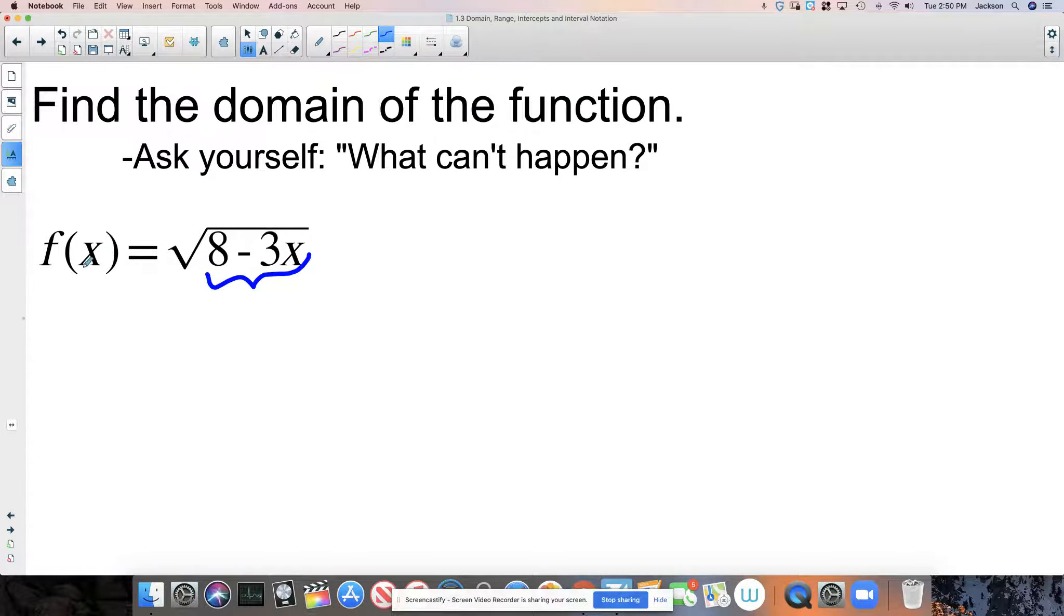The result of this—whatever I plug in here is going to get plugged in here. If I plug, let's just say 10, f of 10. If I put 10 into this function, it's going to say 8 minus 3 times 10. 3 times 10 is 30. 8 minus 30 is negative 22. So we're talking about taking the square root of negative 22, and we can't do that. So this number isn't in the domain of the function.